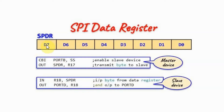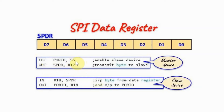We start with the data register, which is an 8-bit shift register, and the byte to be transmitted will be copied into this register. As an example, let's say we want to transmit a byte from the master device to the slave device. Within the master device, register R17 contains the byte to be transmitted. This byte is copied into the data register using the OUT instruction. But before we can transmit the byte, we first need to enable the slave device by sending the active low slave select signal. On the receiver side — the slave device — the data register will have the byte. We copy it into a register using the IN instruction, and then we can output the byte to a port.